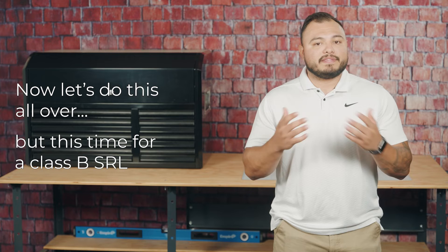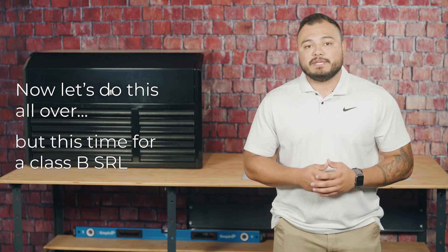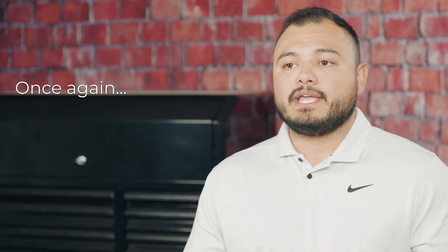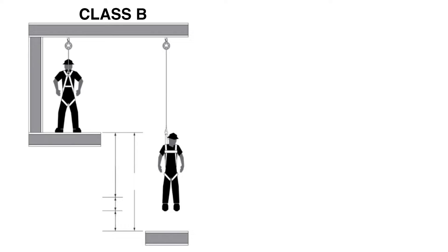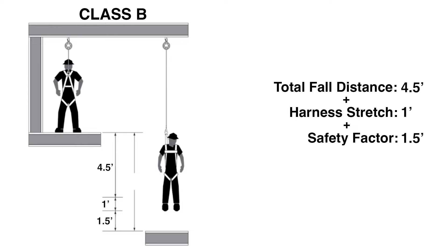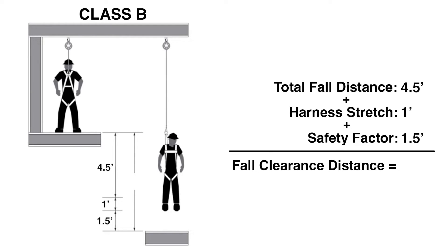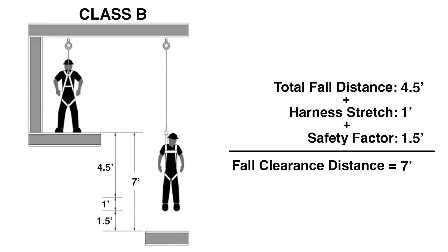Now let's do this for a Class B SRL. We start with the total fall distance, which for a Class B is four and a half feet. Then we add one foot for harness stretch and a safety factor of one and a half feet, since there is a longer fall distance. Once these values are added, we see that the working surface must be at least seven feet above the next lower level or ground.